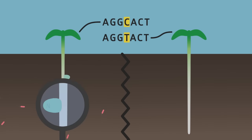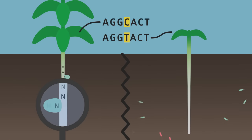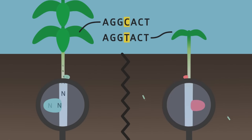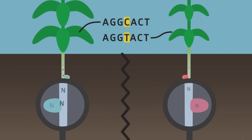Different plant genotypes choose different bacteria. Here on the left, this plant is interacting with the more beneficial strain, making a good choice. Here on the right, this plant is allowing the less beneficial rhizobia to infect the nodules as well.